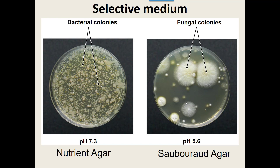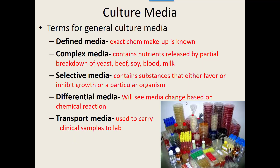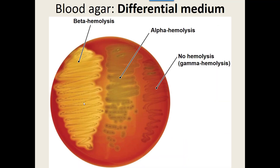Differential media shows a change based on some type of chemical reaction in the media — it's going to look different because the bacteria did something to it. An example is blood agar: it starts as bright blood red, but some bacteria break down the red blood cells completely and you can see through the plate; others produce a greenish color; and others leave it unchanged. If you can see through the plate, that's a differential media showing differences — it's a differential media.